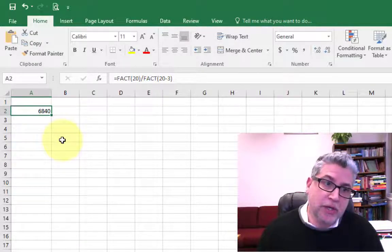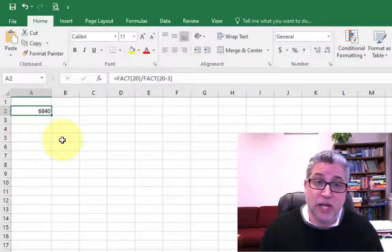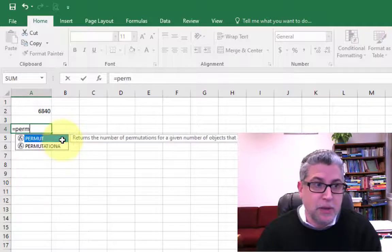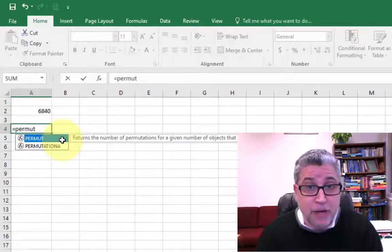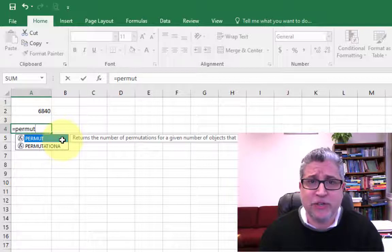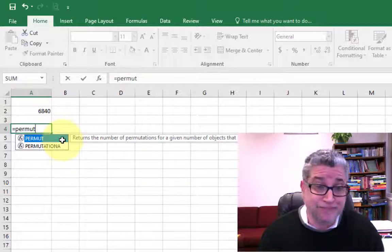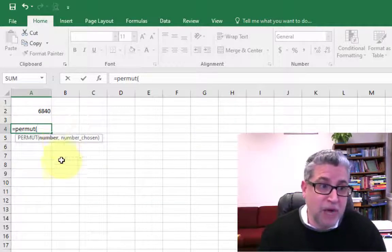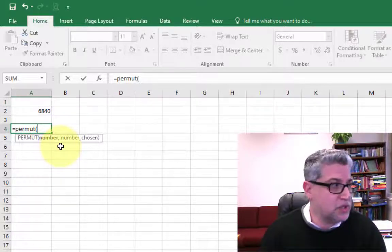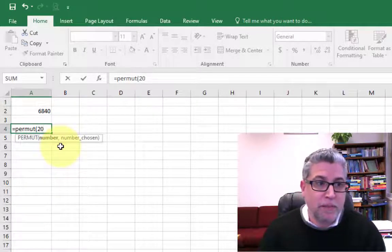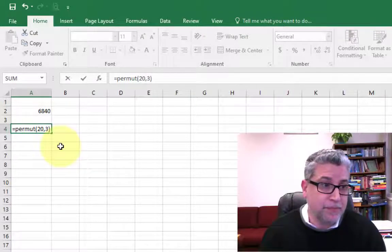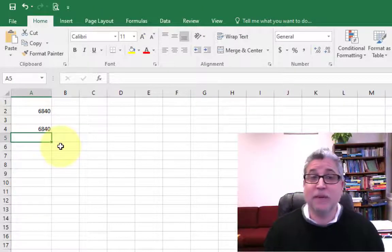We could just as easily use a direct calculation using Excel's permutation formula. The permutation formula is permut, not permute. I don't know why, because typing an extra letter was just way too complicated for Excel. So permut it is. So start off your parentheses and then it prompts you what is the number and then what is the number chosen. So we had 20 possible friends and we need to choose how to order three of them. Key that and we get the same exact answer.